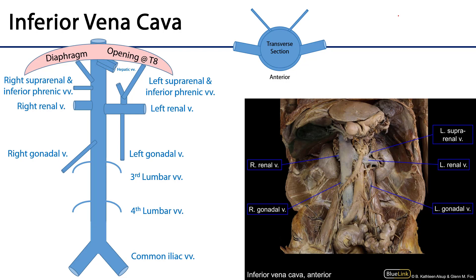Inferior to the diaphragm we have the inferior vena cava. In cross section, we have typically visceral branches returning blood laterally, parietal branches returning blood posterolaterally, and sometimes even an errant anterior branch for viscera. Let's take a look at the branches of the inferior vena cava.